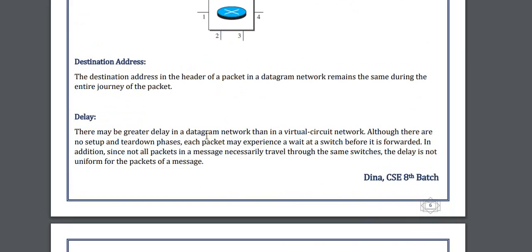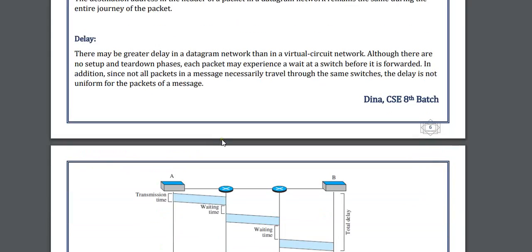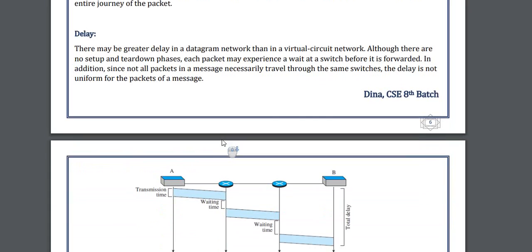Delays occur in the processing unit or transmission section. When you put the data on the line there is a delay known as propagation delay, and when you send the data from one source to another this is known as transmission delay. There are four types of delays which we will discuss in further slides.